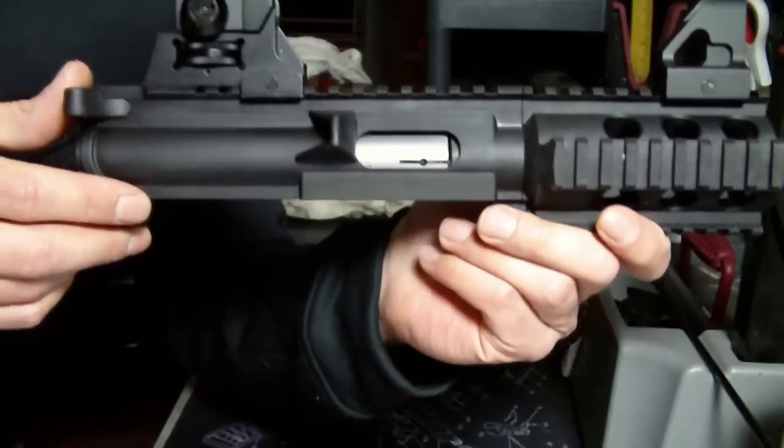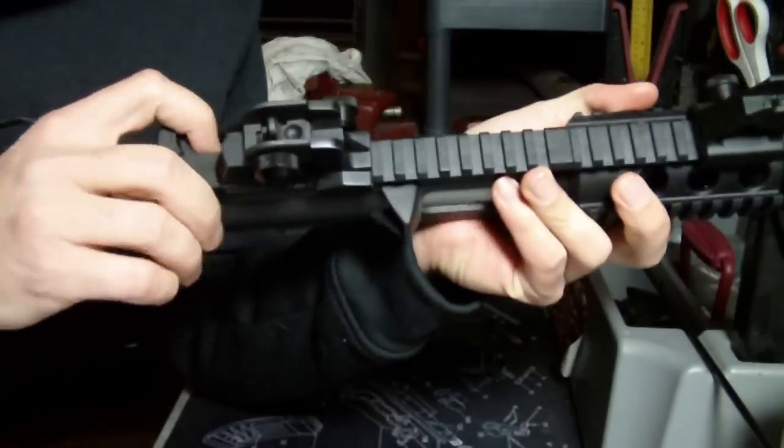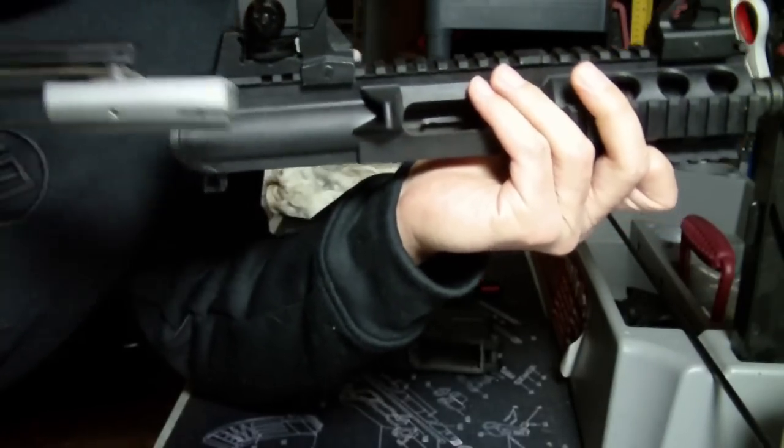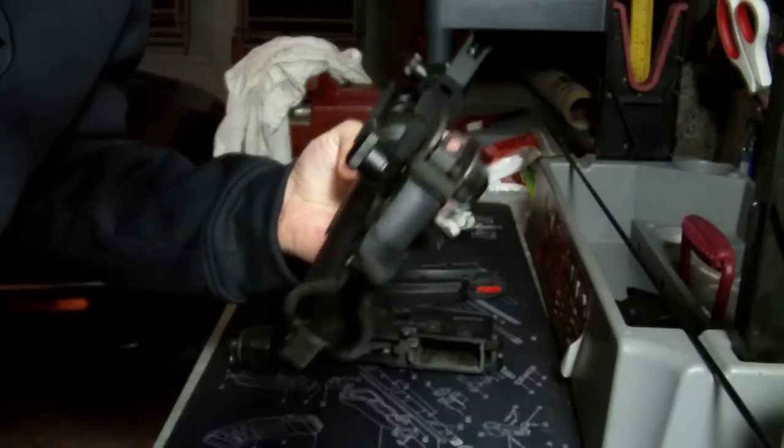Once you have the lower separated from the upper receiver, what you can do is use your charging handle and just go ahead and pull out your whole bolt carrier assembly. Slides right out. With that, you're left with just the upper receiver.